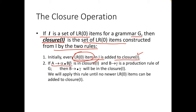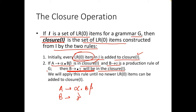Second rule: if you have A to alpha dot B beta as a production rule in closure I, and B to gamma is a production rule of G, then we add B to dot gamma to the closure of I. We need to understand what this dot means — that is the key reason for this rule.